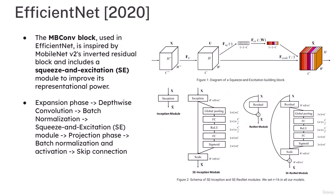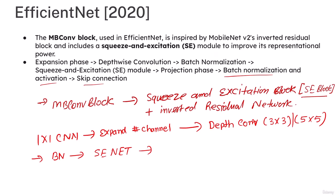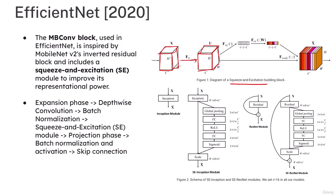Let's look at the details of how EfficientNet works. In figure one you can see the SE block. In the SE block, you start with an input, a filter is applied to get a feature block, and then the SE module is applied. There is a skip connection and then the SE module, and finally scaling happens.